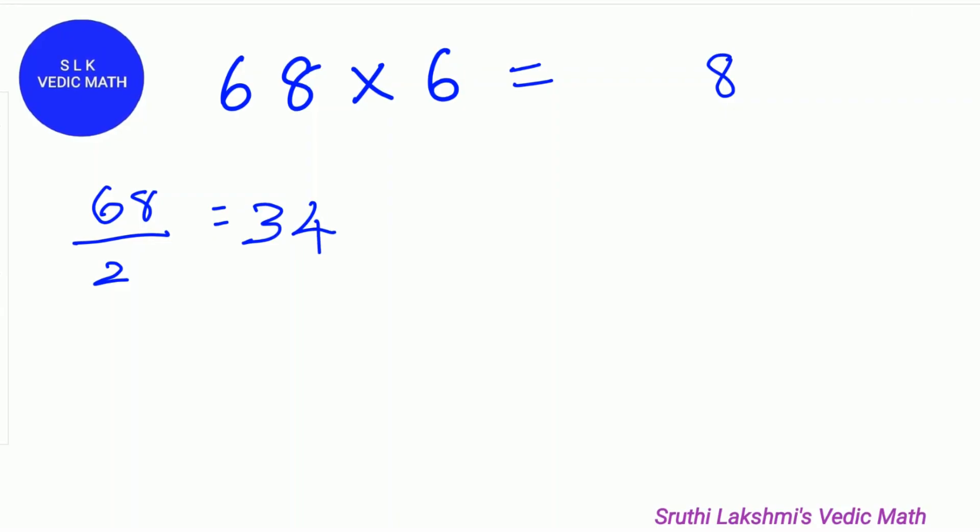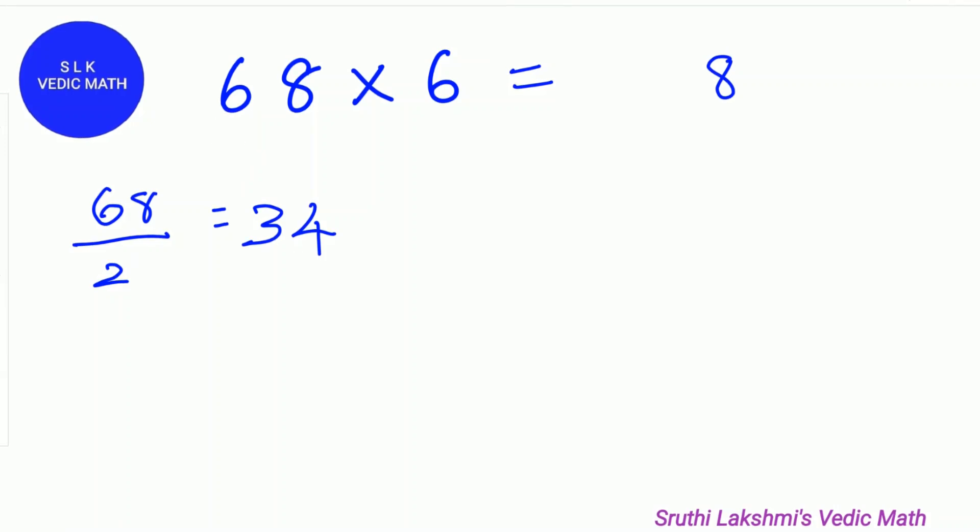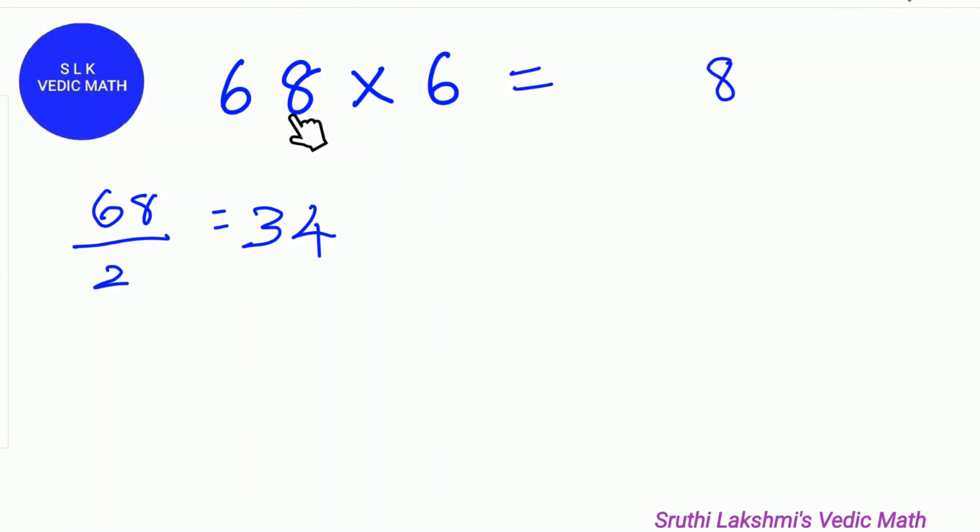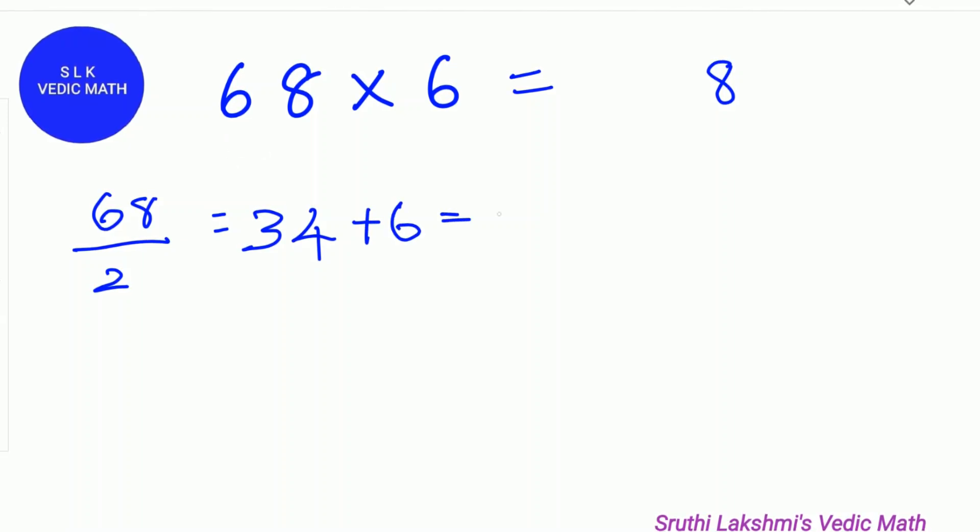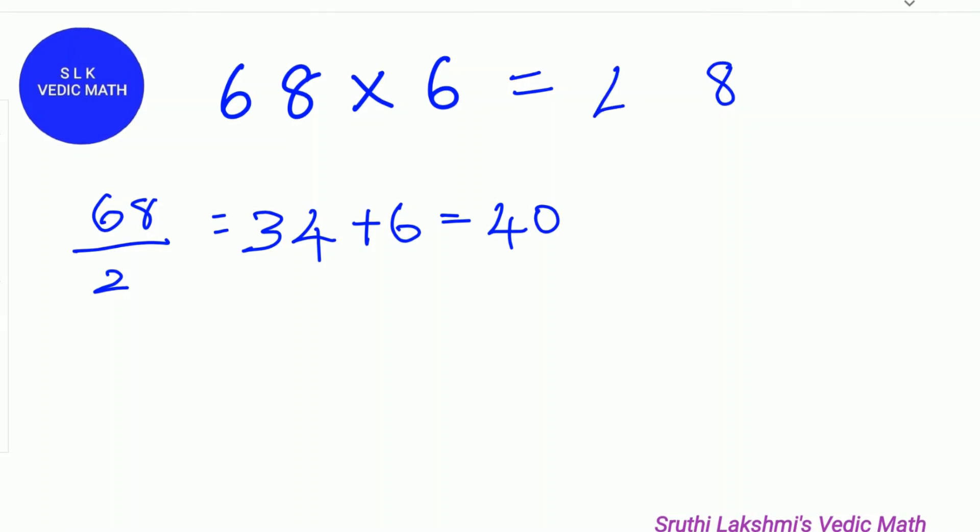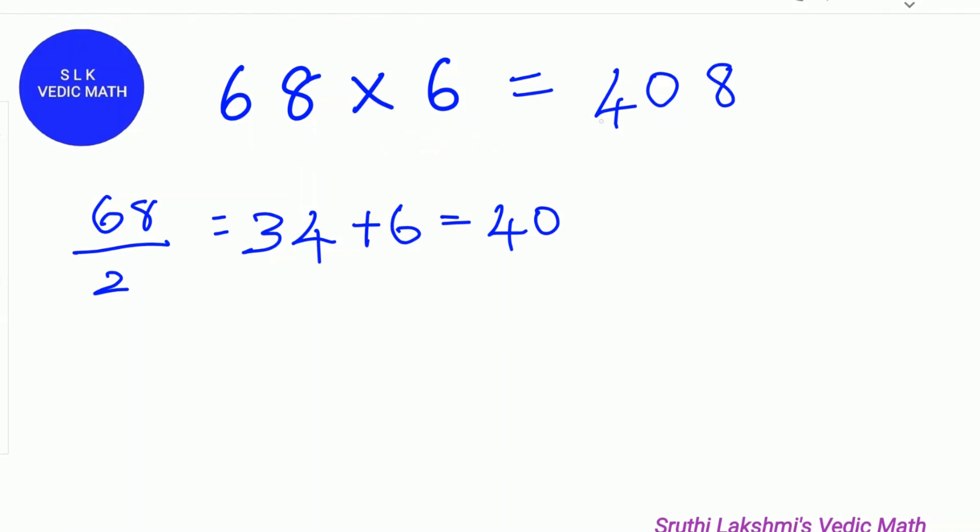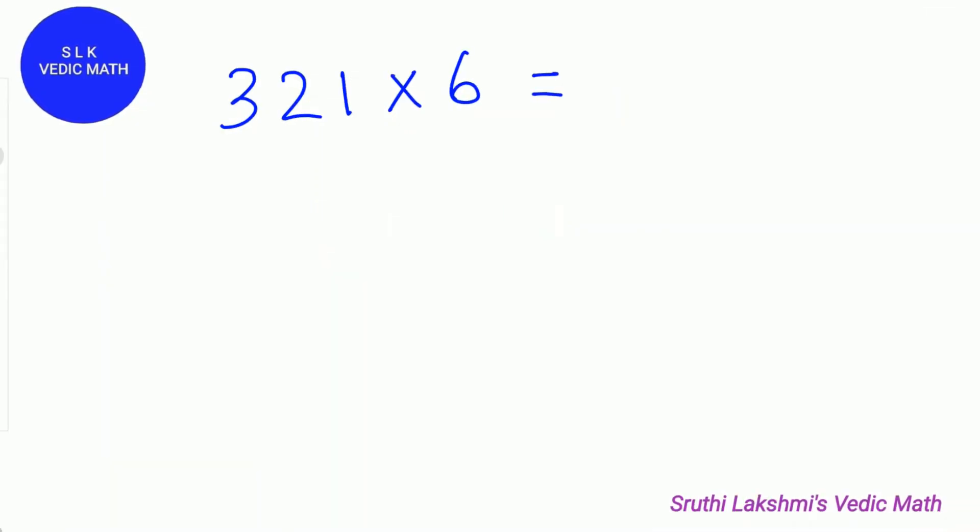We add 34 to 6 because we add the remaining digits except the last digit to 34. Since 6 is the only digit, we add 34 plus 6 which is 40. So we write 40 over here. So 68 times 6 is 408.